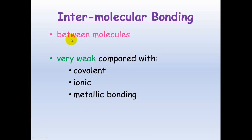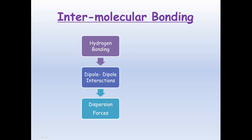So with intermolecular bonding, it's important to remember that it occurs between molecules and it's very weak compared with covalent, ionic, and metallic bonding. If you're looking at the three different types, you've got hydrogen bonding, dipole-dipole interactions, and dispersion forces. And these are the strongest and these are the weakest ones.